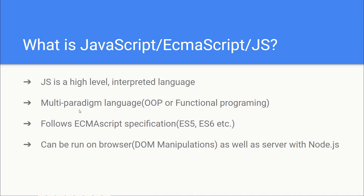Second: JavaScript is a multi-paradigm language — it can be used as object-oriented programming or functional programming. Some languages like Java are strictly object-oriented where everything is a class, and functions attached to classes are called methods. JavaScript can work as either object-oriented or functional. Third: it follows ECMAScript specification — also known as ES5, ES6, ES7, ES8 — an international governing body which publishes specifications for what features JavaScript should have. It can run in the browser for DOM manipulation as well as server-side with Node.js.